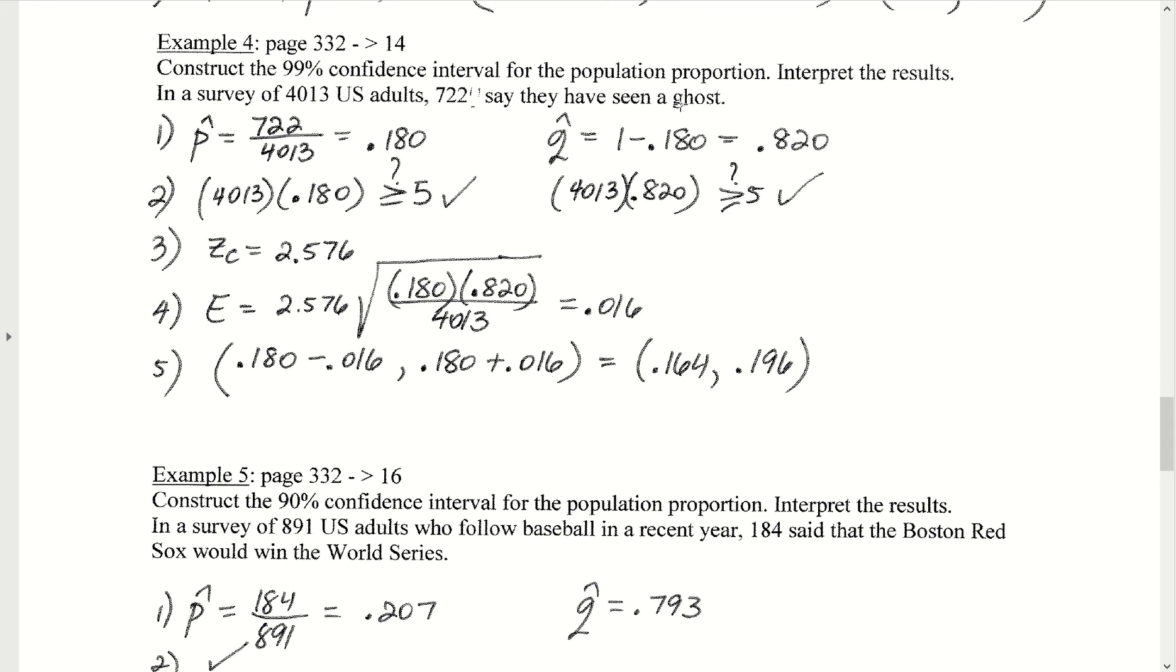Let's calculate the 99% confidence interval for the true proportion of all people that we believe have seen a ghost. To start with, we want to find the point estimate for p-hat and q-hat. P-hat is X divided by N. The number of people that do believe they've seen a ghost was 722 divided by our sample size, which was 4,013. That gives us a p-value of 0.180. To find q-hat, we do 1 minus p-hat, 1 minus 0.180 would give us 0.820.